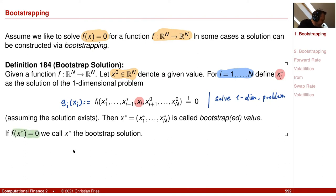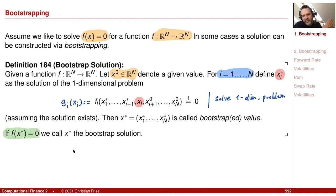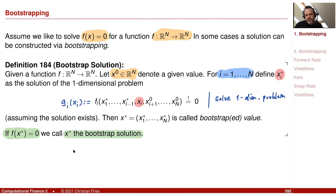In general this is not the case if there is complicated interdependence. But if I have the nice structure that the solution of the i-th problem only depends on the first i values, then I can construct this bootstrap solution. x* is the bootstrap solution, which links back to our picture of forward rate volatilities mapping to swap rate volatilities.